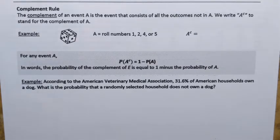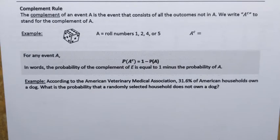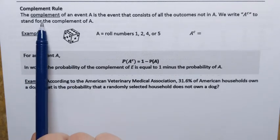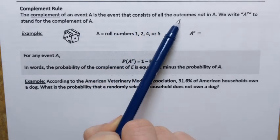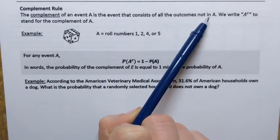In this video, we're going to have a quick overview of the complement rule for probabilities. But first of all, what is the complement? The complement of an event A is the event that consists of all the outcomes not in that event.